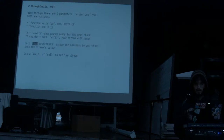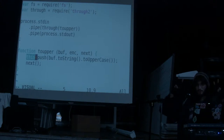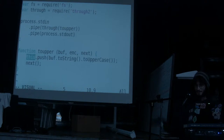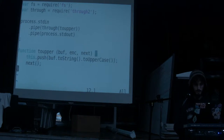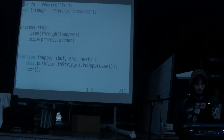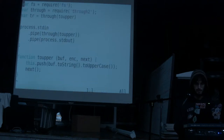Inside the callback, you can do this.push — 'this' refers to the context set up for us by the through module. The context has methods like push and write. This is the same as if I had saved the result of through to a variable and called tr.push — it's kind of a shorthand so you don't have to name as many things, but it only works inside of the callback.